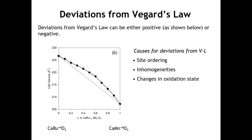What leads to a deviation from Vegard's Law? In this case, we have spectroscopic evidence telling us that in the middle, the oxidation states are not quite 4+ and 4+. We see that we get some manganese 3+ and ruthenium 5+. So sometimes you can have a kind of charge transfer that changes the average oxidation state. The average size of manganese 3+ and ruthenium 5+ is actually bigger than the average size of ruthenium 4+ and manganese 4+.